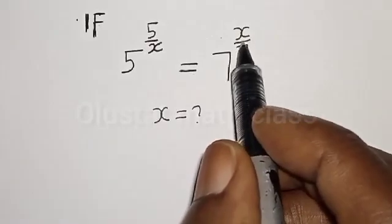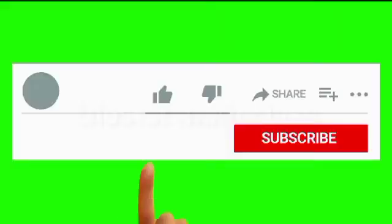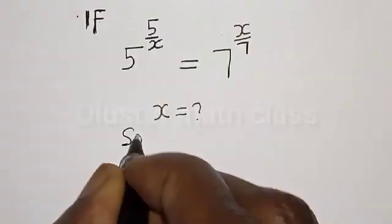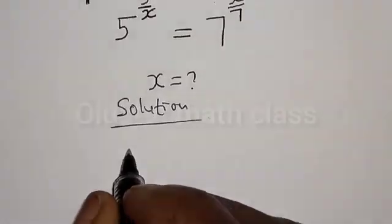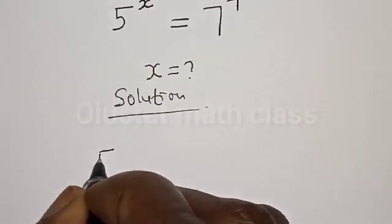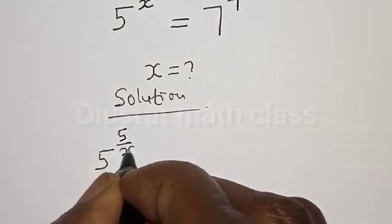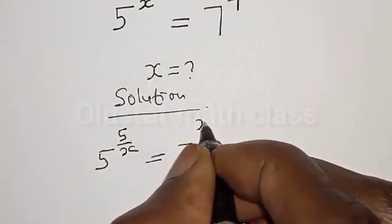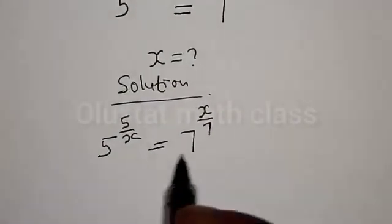We have 5 raised to power 5 divided by x is equal to 7 raised to power x divided by 7. Please don't forget to like, share, comment and subscribe. Solution: we have the given equation, and now what we do is take the log of both sides.